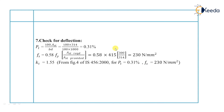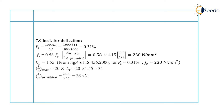We calculate the L/d maximum ratio. For a simply supported slab, L/d max equals 20 × Kt. So 20 × 1.55 equals 31. L/d provided equals 2600 / 100 equals 26, which is less than 31. Therefore, L/d max is greater than L/d provided. Hence, the section is safe against deflection.